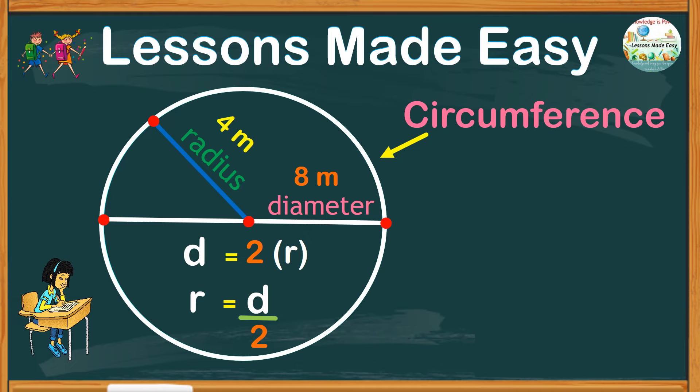Do you have any idea? To calculate the circumference, we must at least have the measurement of either the radius or the diameter. Although we can estimate the circumference,